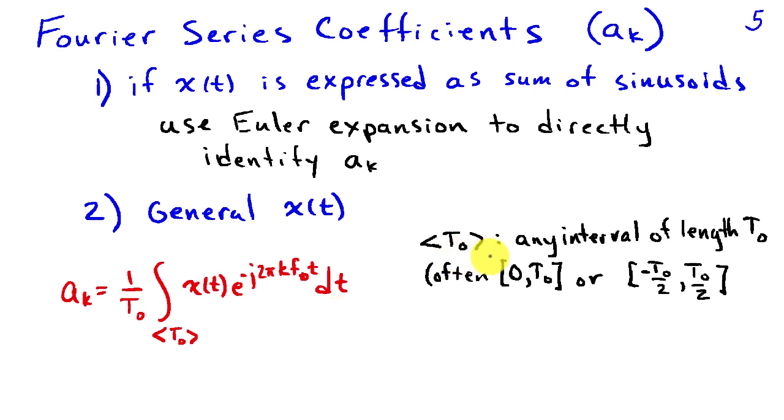This notation means any interval of length T₀, and most often we're going to use 0 to T₀, or if the signal has even symmetry about the origin, it's oftentimes convenient to integrate with respect to symmetric interval minus T₀ over 2 to T₀ over 2. So most of the time one of these two cases will be the preferred choice, but you can choose the interval to be whatever you wish if it's going to simplify the integration, as long as the duration of that interval is T₀.